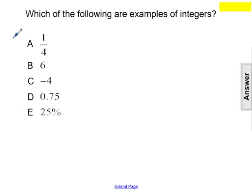So looking at our choices, A: 1/4. 1/4 is not a positive counting number, so this would not fit our definition. B: positive 6 is a positive counting number, so that works.